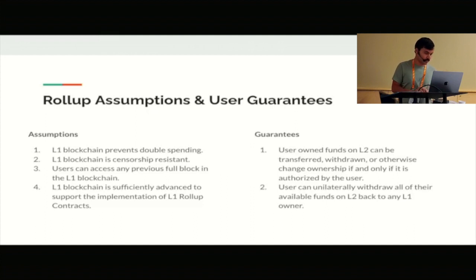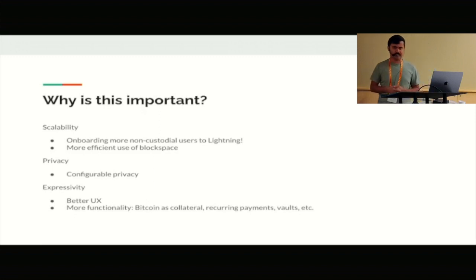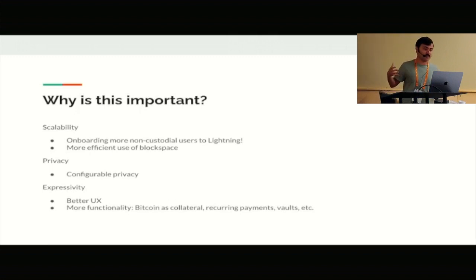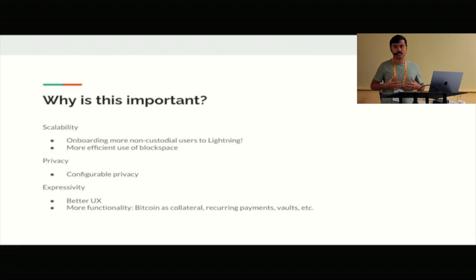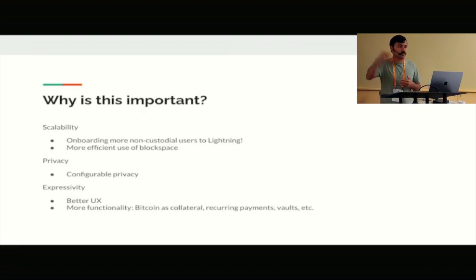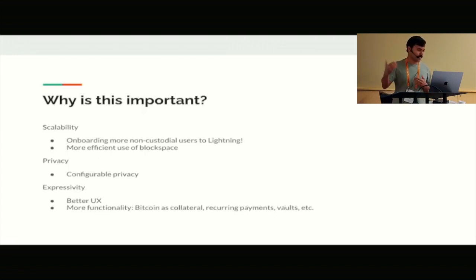Why is this important? We have a lot of benefits around scalability. Validity rollups offer a construction where a bunch of transactions can happen off-chain and get compressed into a much smaller footprint on-chain. This is really important for onboarding more non-custodial users to Lightning. We know there are certain limitations of just using Bitcoin block space when opening and closing channels, doing submarine swaps, and adjusting liquidity. There are real limitations on the number of users we can onboard onto Lightning in a non-custodial way.